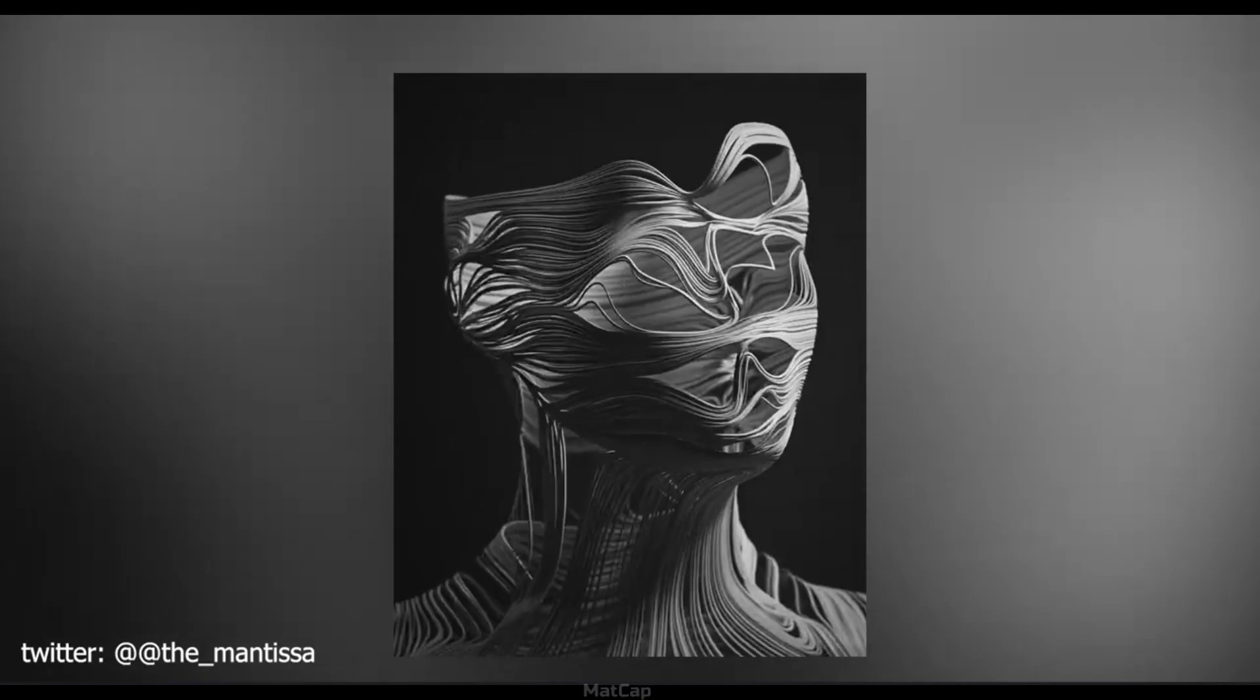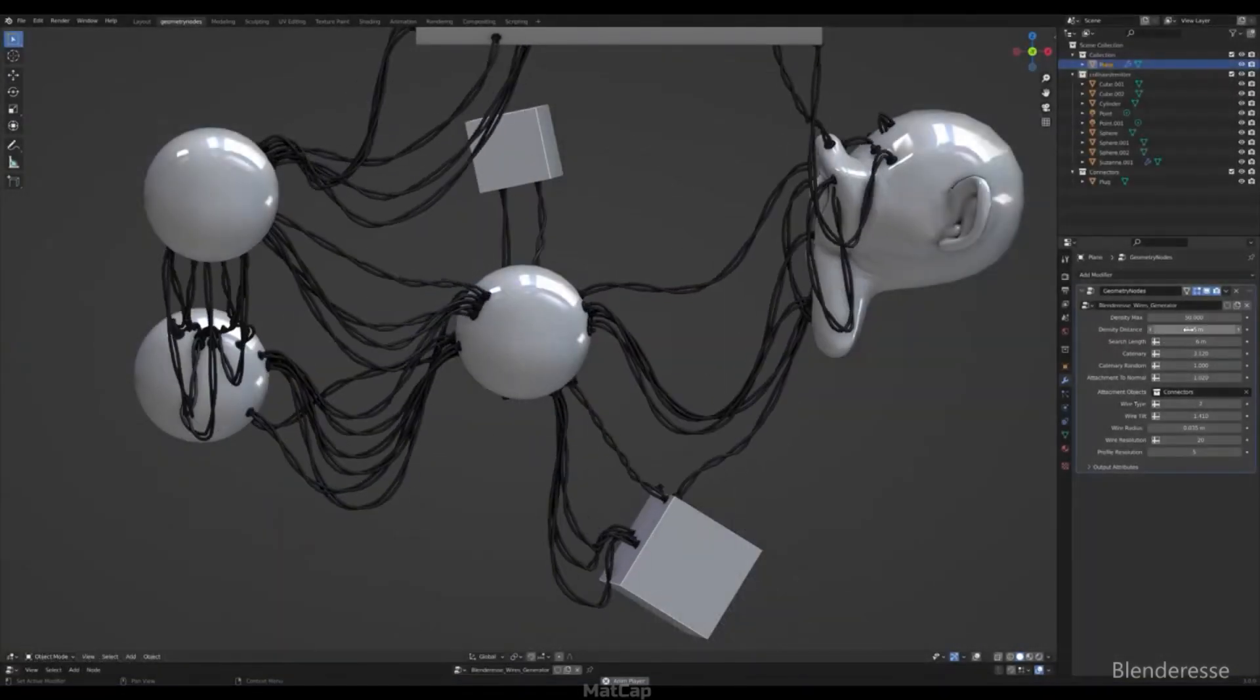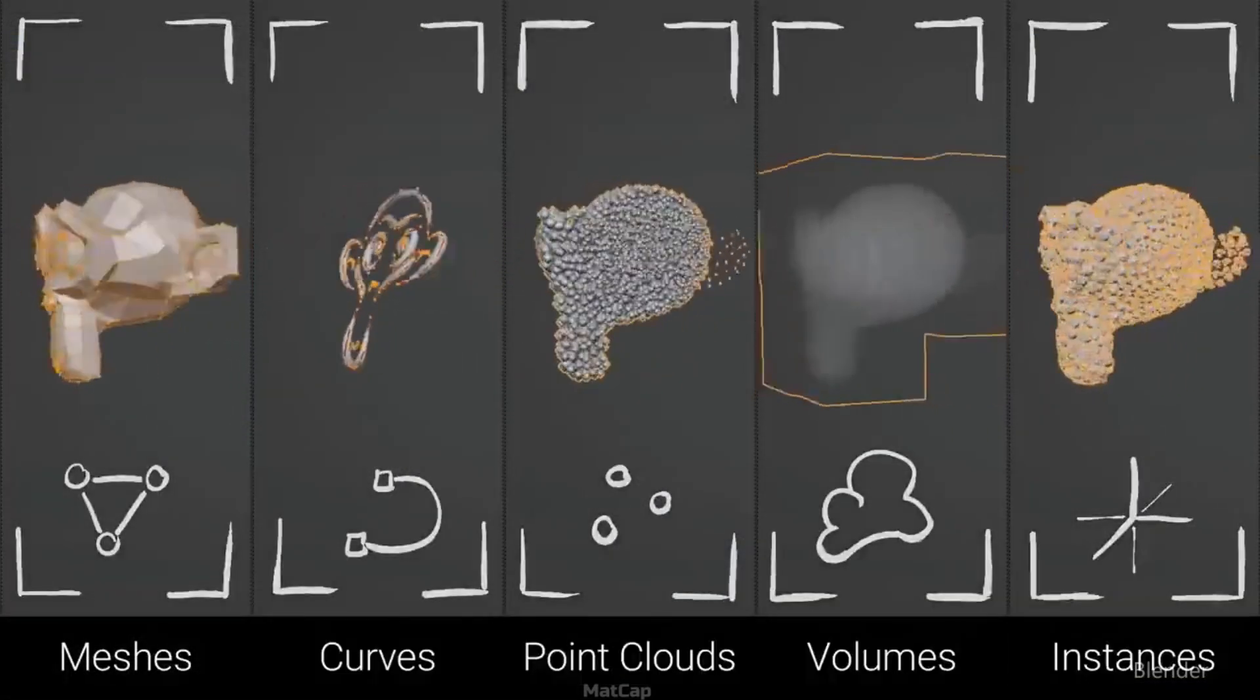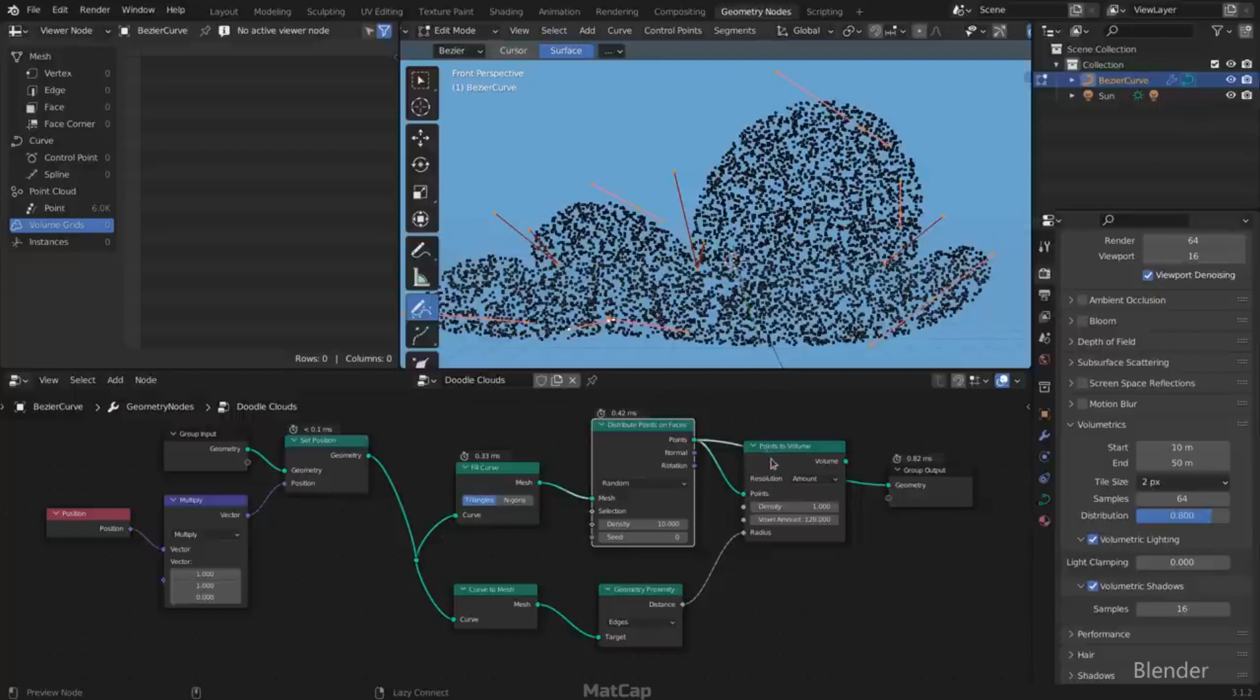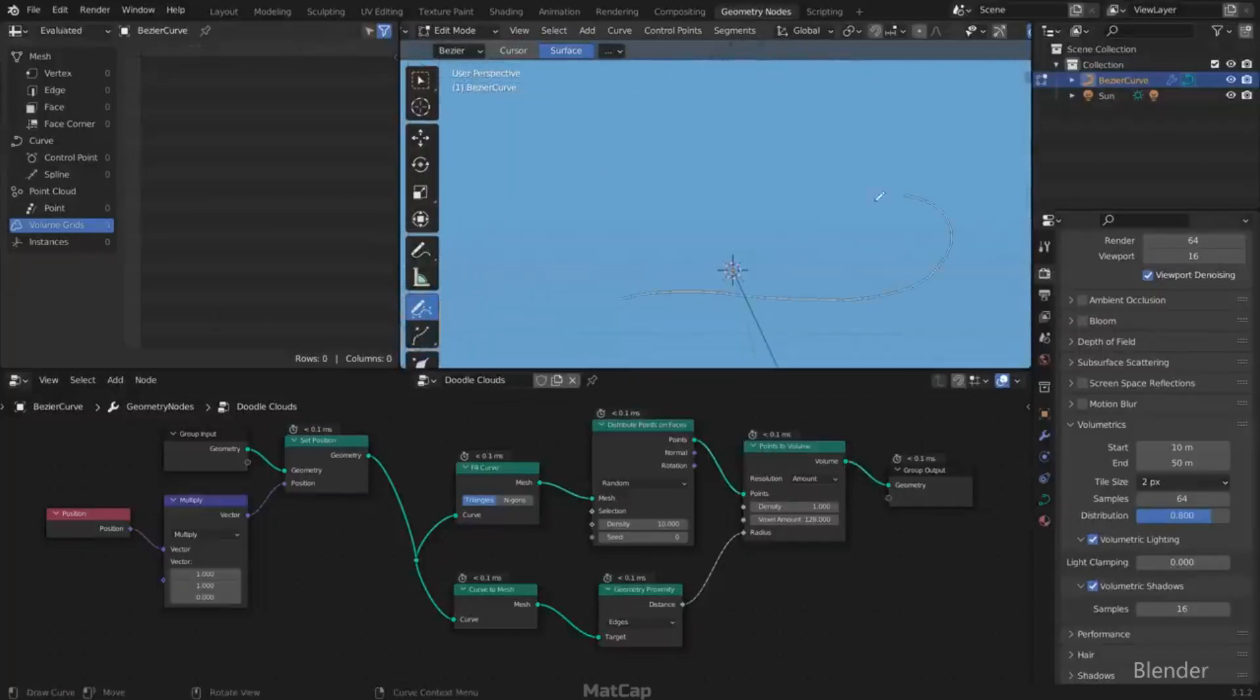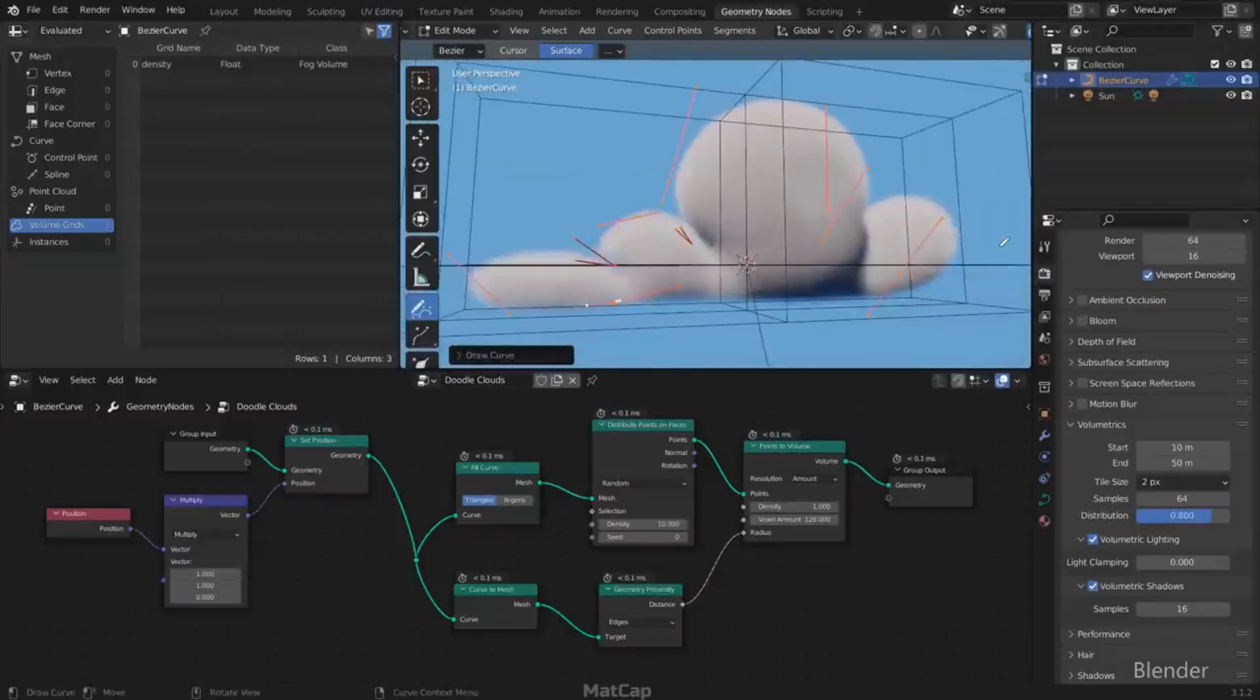For example, mesh group nodes are responsible for operations related to mesh editing. In the geometry node system, you can interact with different types of geometry. For example, you can draw a curve and designate it as input information. Then create mesh from it and further derive points and volumes from those points. This way you can create cartoonish clouds using simply curves and a few geometry nodes.